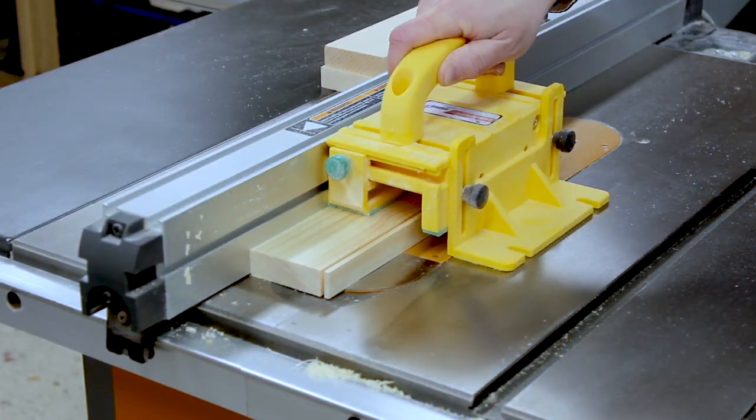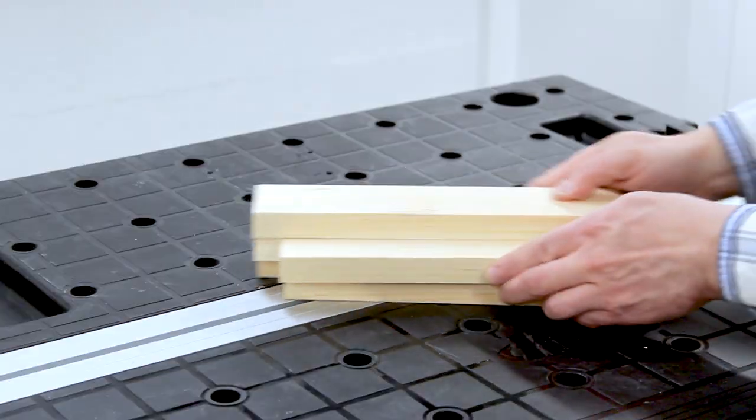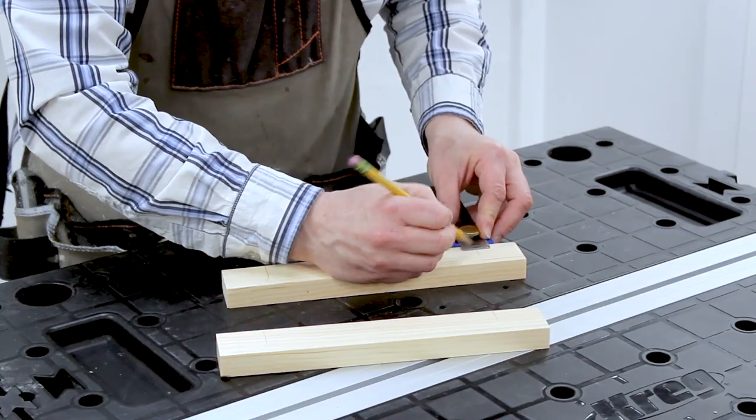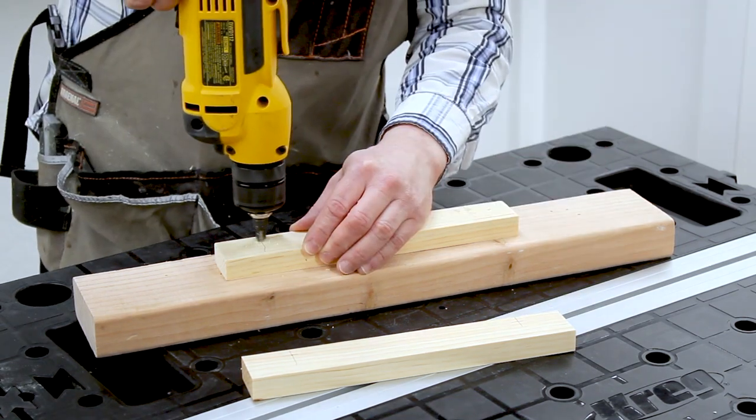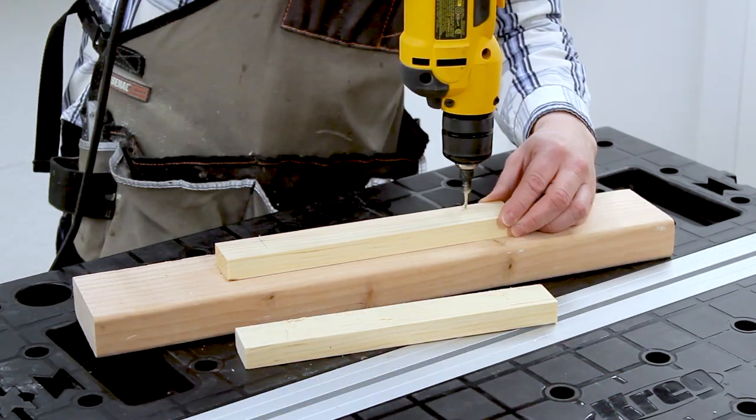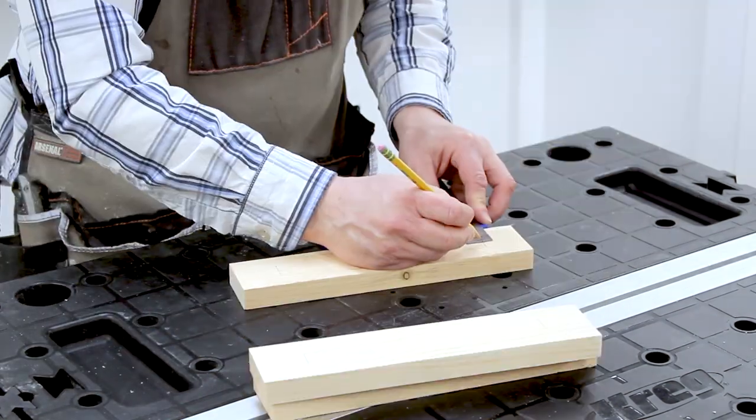The 1x3 pieces were ripped to 2 and a quarter inches on the table saw. I marked the locations for countersink holes to attach the 1x2 horizontal hanger parts to the vertical hanger parts, and I did the same for the 2 and a quarter inch pieces.